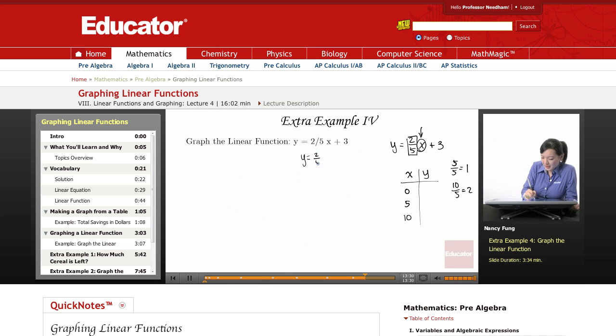So y equals 2 fifths, put in 0 here, plus 3. So 2 fifths times 0 is 0. And that leaves you with 3. So a nice whole number to work with.